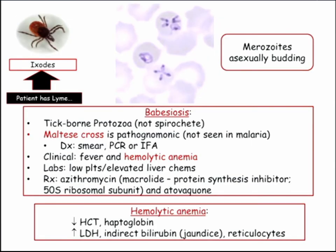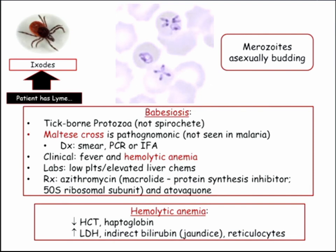Babesia — Maltese cross. This is just a reference slide on babesiosis. There are no shortcuts on micro; as you come across them, just start making slides. Maltese cross is pathognomonic. Anytime you see the word pathognomonic, that's the thing you have to remember about an infection, because that's how they're going to present it to you. This patient is coming in with a hemolytic anemia and fever in the summer on Cape Cod or Martha's Vineyard, they're going to show you the smear and describe the Maltese cross — because it's pathognomonic, that's how you make the diagnosis.